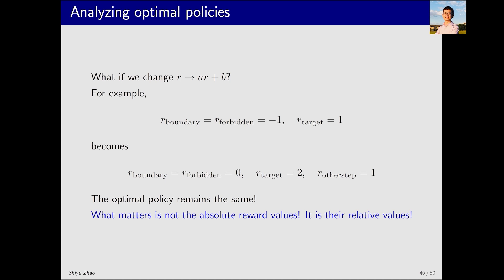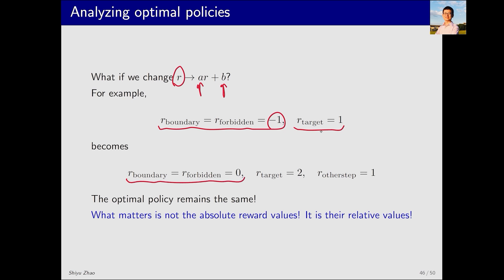Next, we consider another crucial situation. What happens when every reward R is multiplied by a factor A and then added to a bias B, resulting in AR plus B? Will the optimal policy change? Let's consider a specific example: boundary and forbidden areas have a reward R of negative 1, and the target area has a reward of positive 1. Now we add 1 to all rewards. As a result, the rewards for boundary and forbidden areas become 0, and the reward for the target area becomes 2. Additionally, the reward for any other step becomes 1.